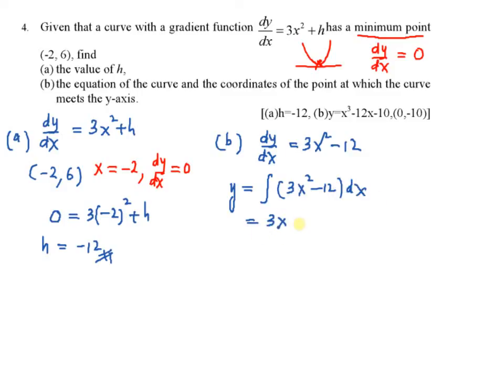This is equal to 3x cubed over 3 minus 12x plus c. How to find the value of c? You're going to find one point. You have one point here, the minimum point. Negative 2, 6.